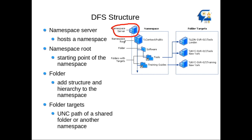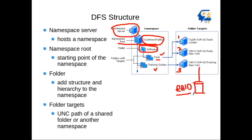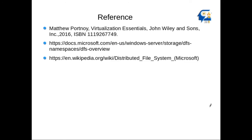Regarding the DFS structure — you have a name server at the top, which normally hosts the root namespace. From the root namespace the administrator can create a hierarchy, something like a 'software' folder. Inside that there are different directories such as 'tools' and 'training guides', contributed by server one and server two, with training guides coming from server three. These are individual backend servers that hold documents or software. In the backend, servers use different mechanisms such as RAID to ensure that data will survive even in case of a disk failure.